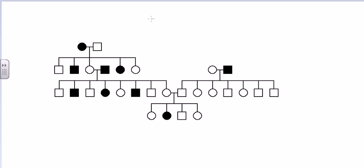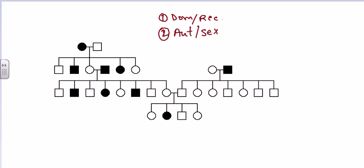First of all, we need to determine whether it is dominant or recessive, and then whether it is autosomal or sex-linked. For dominant traits, there is an empirical rule: whatever infection happens to the parent, it must be transferred to at least one of their children in the next generation.